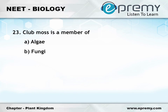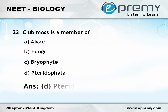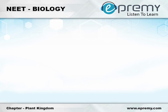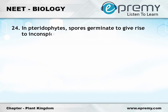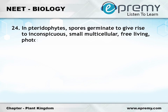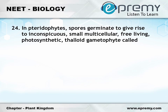Question number twenty-three: club moss is a member of option A algae, option B fungi, option C Bryophyta, option D Pteridophyta. The answer is option D Pteridophyta. Question number twenty-four: in pteridophytes spores germinate to give rise to inconspicuous, smaller, multicellular, free-living, photosynthetic, thalloid gametophyte called option A protonema, option B prothallus, option C archegonia, option D ovule.